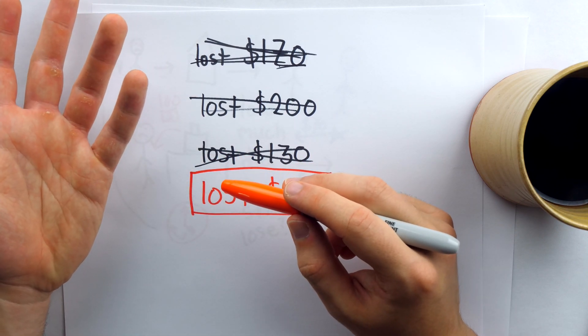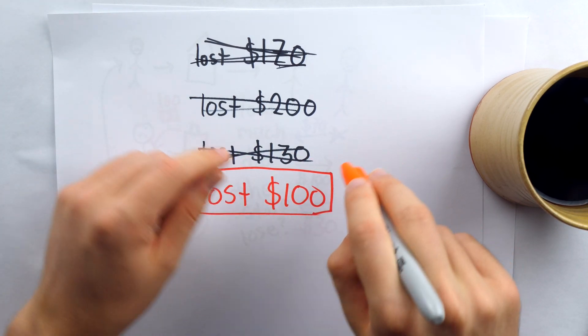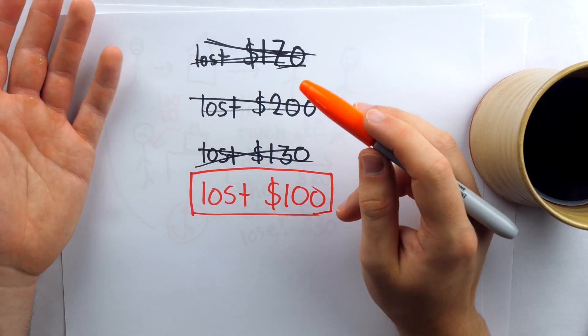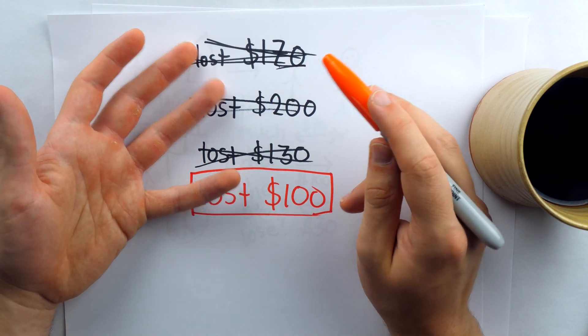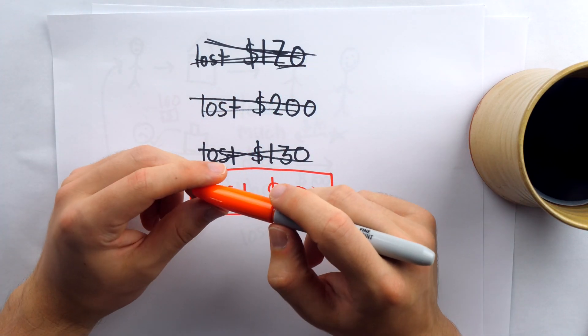And then later that night he goes back and steals a $100 bill. Then hopefully it's very clear that the store only lost $100, and it's the same exact situation as before.